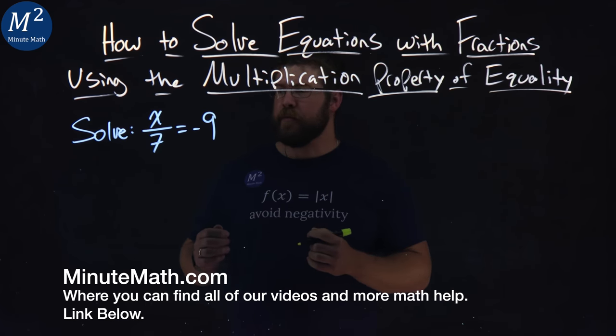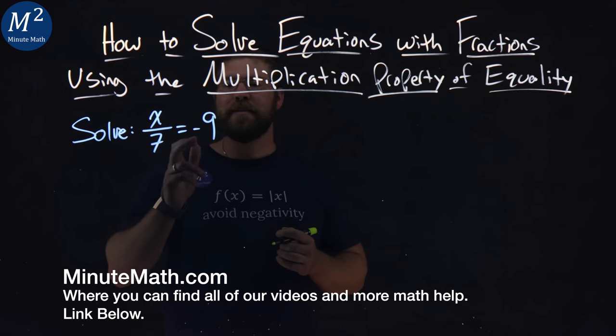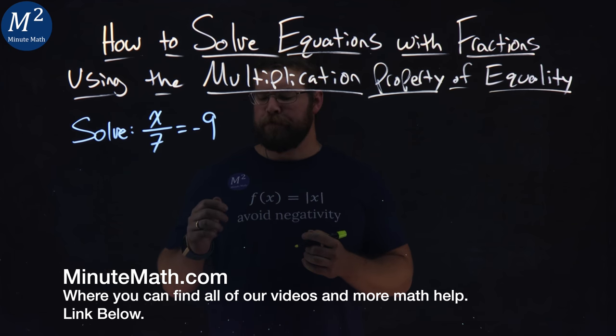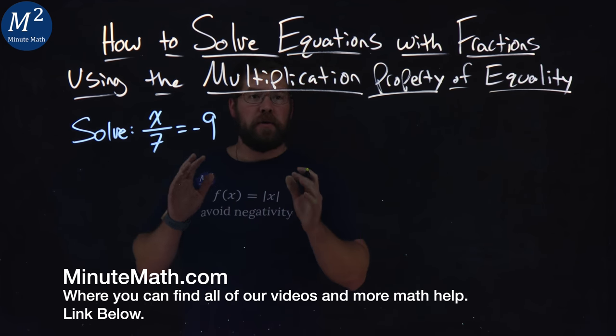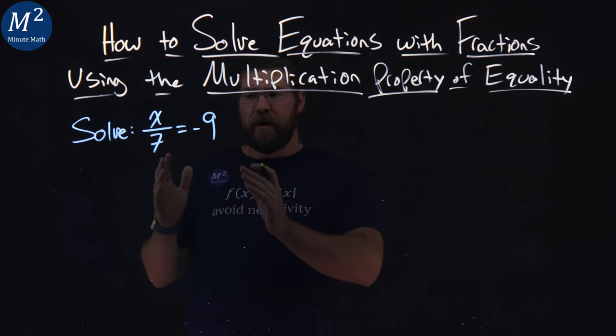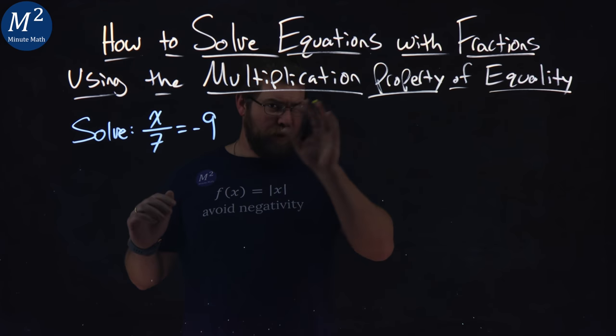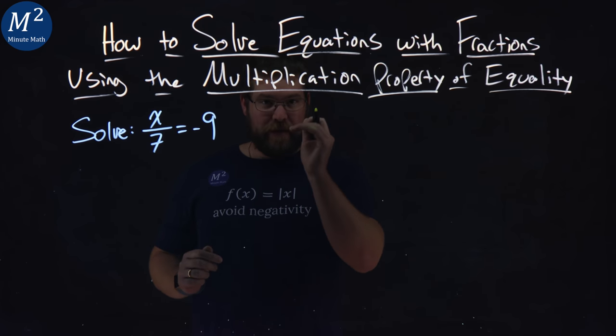We're given this problem right here. Solve x over 7 equals negative 9. Well, the multiplication property of equality says if we multiply one side of the equation by a number, we can multiply the other side of the equation by the same exact number.